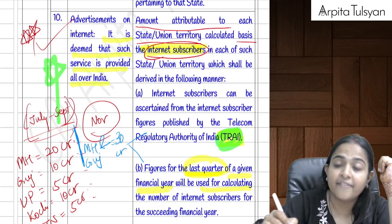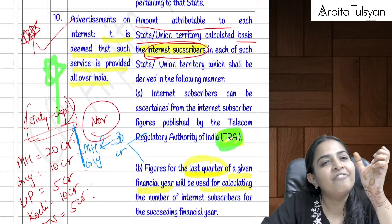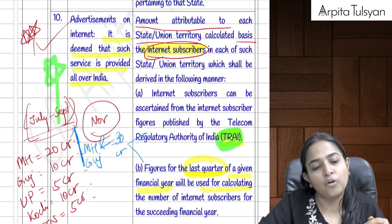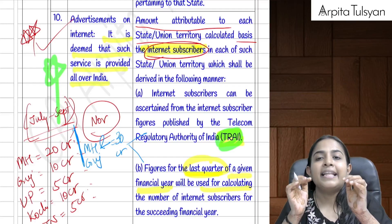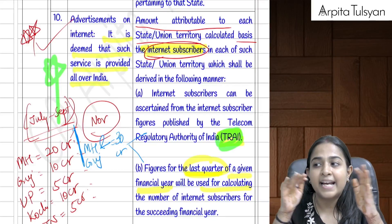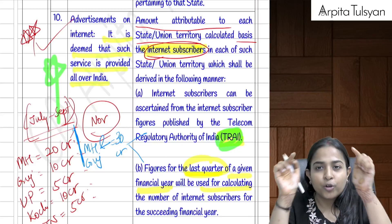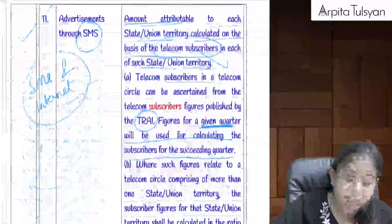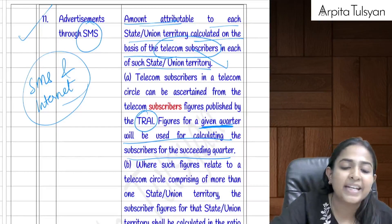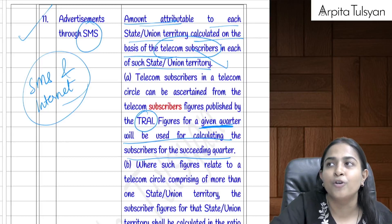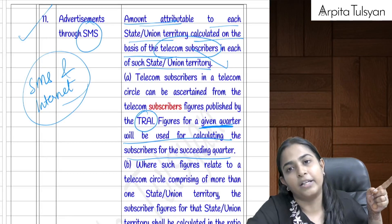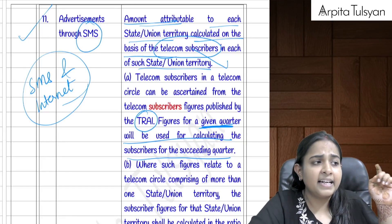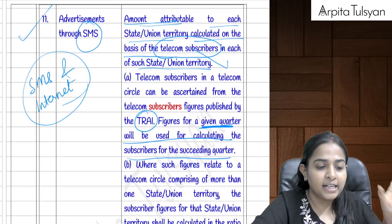For cinema advertisements, the amount is divided based on amounts payable to respective cinemas (e.g., PVR) in each state. A summary table of the entire Section 12(14) provisions is provided in the notes for revision.